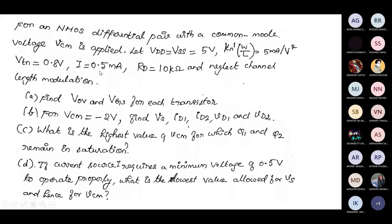Part A: find the overdrive voltage and VGS for each transistor. Part B: for VCM equal to minus 2 volts, find VS, drain current, and drain voltage. Part C: find the highest value of VCM, which is VCM max, for which Q1 and Q2 remain in saturation.